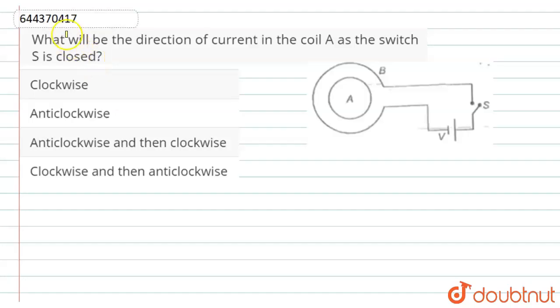Hello dear students, here the question is what will be the direction of current in the coil A as the switch S is closed?